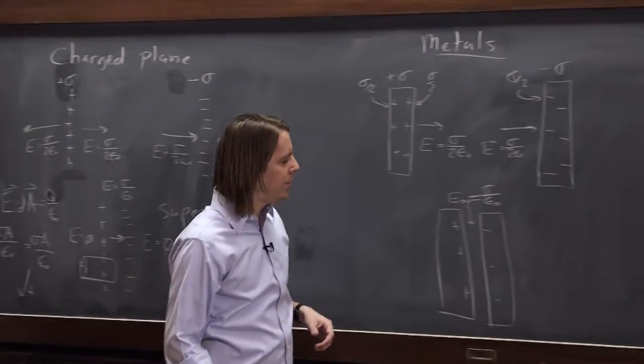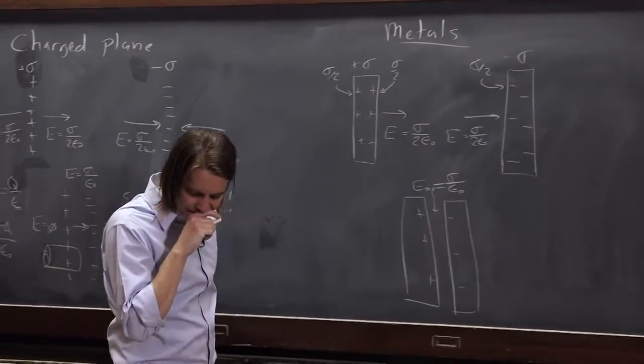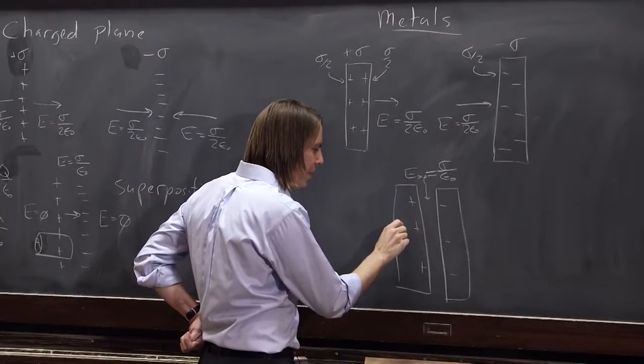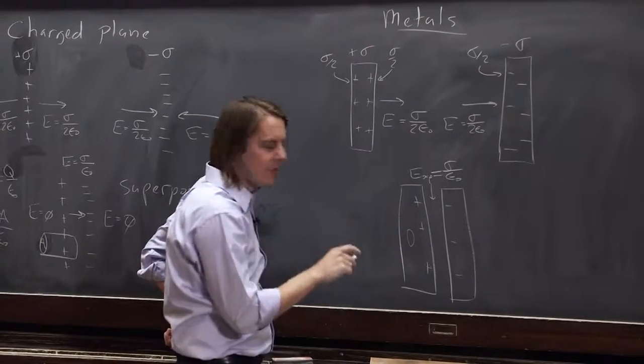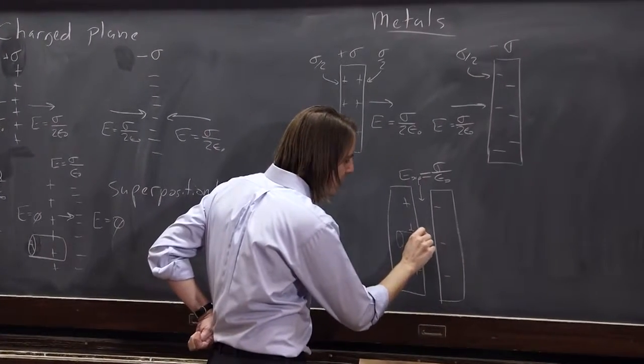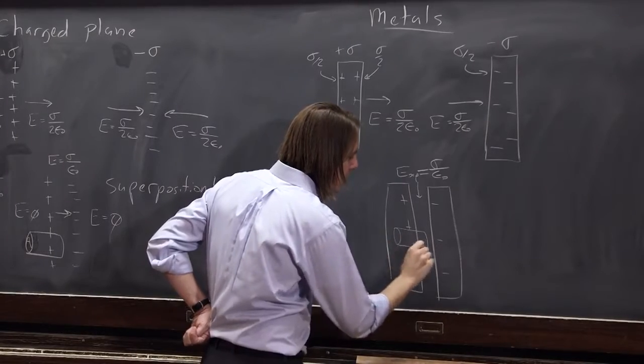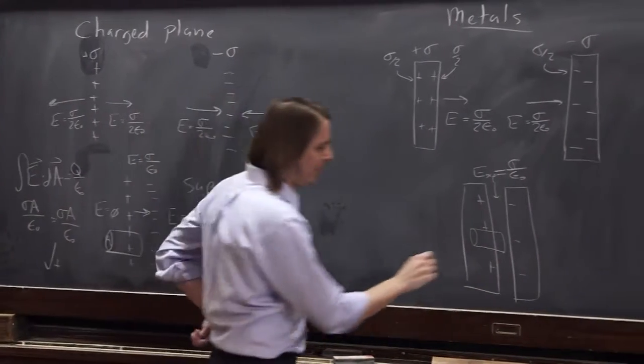What if we now come over here? Let's do Gauss's law over here, and let's put one of the Gaussian surfaces inside the metal, and let's have the other one out here.